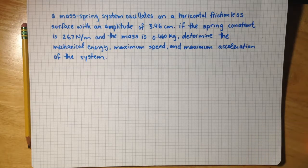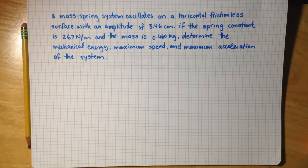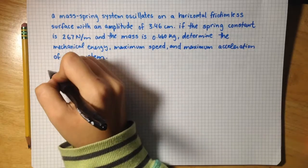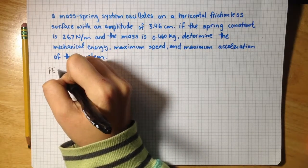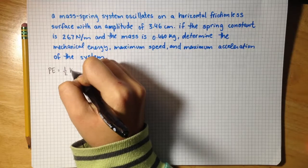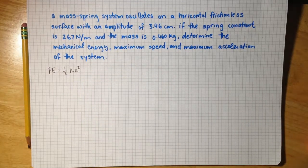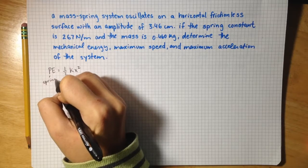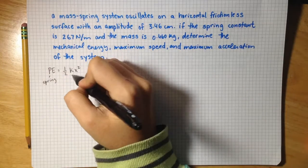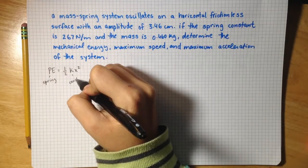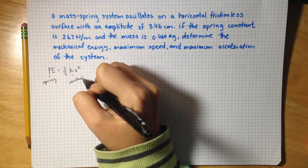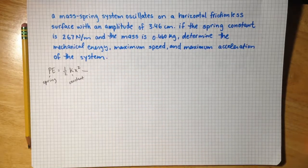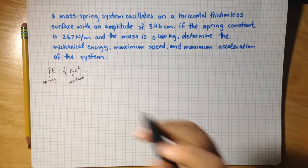So to solve for the mechanical energy, I'm going to use the equation PE equals one-half kx squared, where the potential energy of the spring is equal to one-half times the spring constant times the amplitude squared.